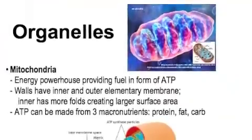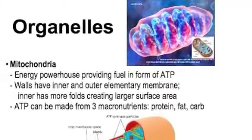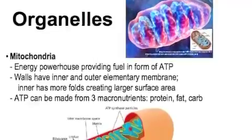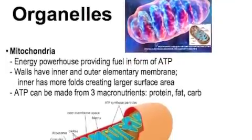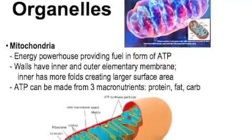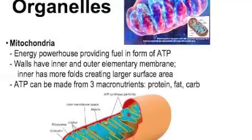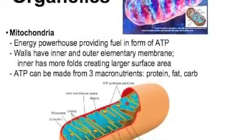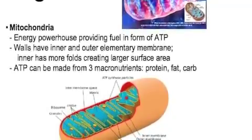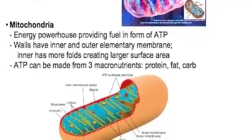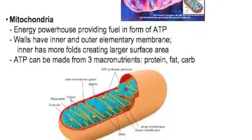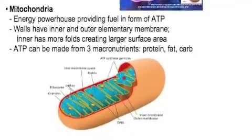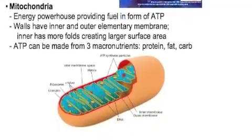The mitochondria is the energy powerhouse, providing fuel in the form of ATP. They are surrounded by membrane and have a second inner one which folds on itself, creating a large surface area which helps in the production of ATP. ATP can be made from all three macronutrients: proteins, fat, and of course most preferably carbs.